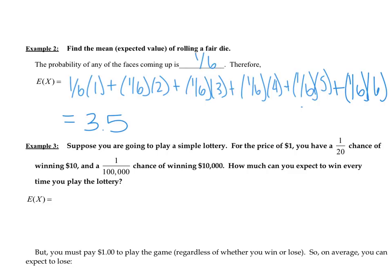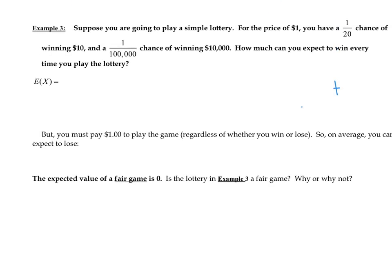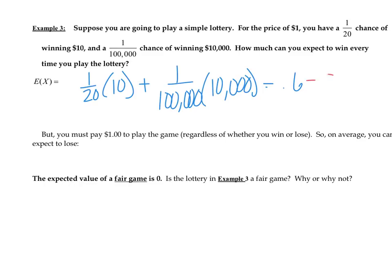For the next example, it tells you that you have, for the price of $1, you have a 1 in 20 chance of winning $10. So the probability is going to be 1/20, and the payout is $10. And then it says you have a 1 over 100,000 chance of winning $10,000. So we have 1 over 100,000 times $10,000. Go ahead, add those two up together, and you should get 0.6. However, there was initial fee that you had to pay $1, so let's subtract the $1.